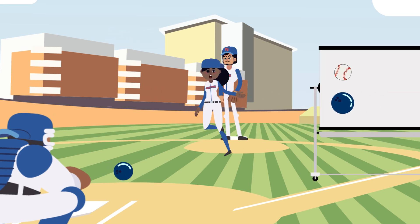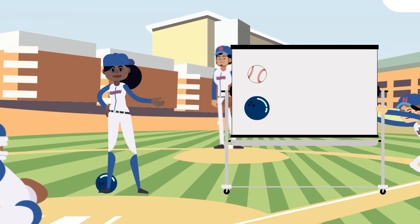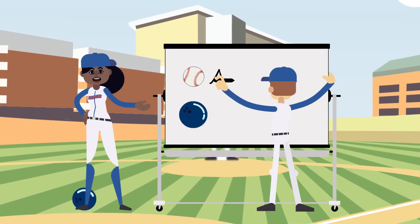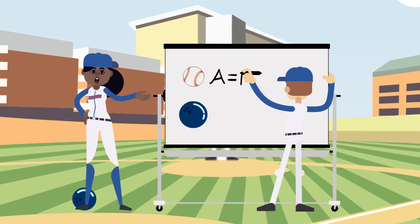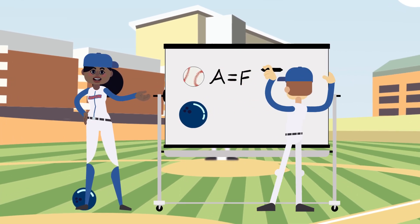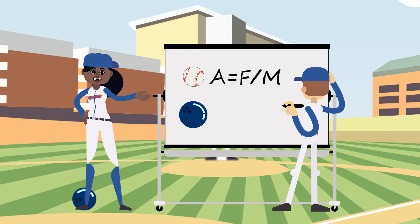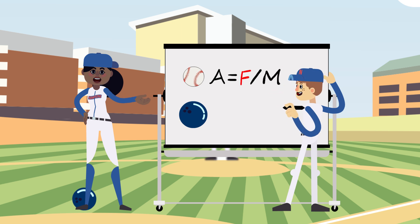Let's write it out. That awesome acceleration you achieved with the baseball — you got that acceleration by throwing the baseball with your net force. If that's a math equation, you're actually dividing the net force you put on the ball by the mass of the ball itself.